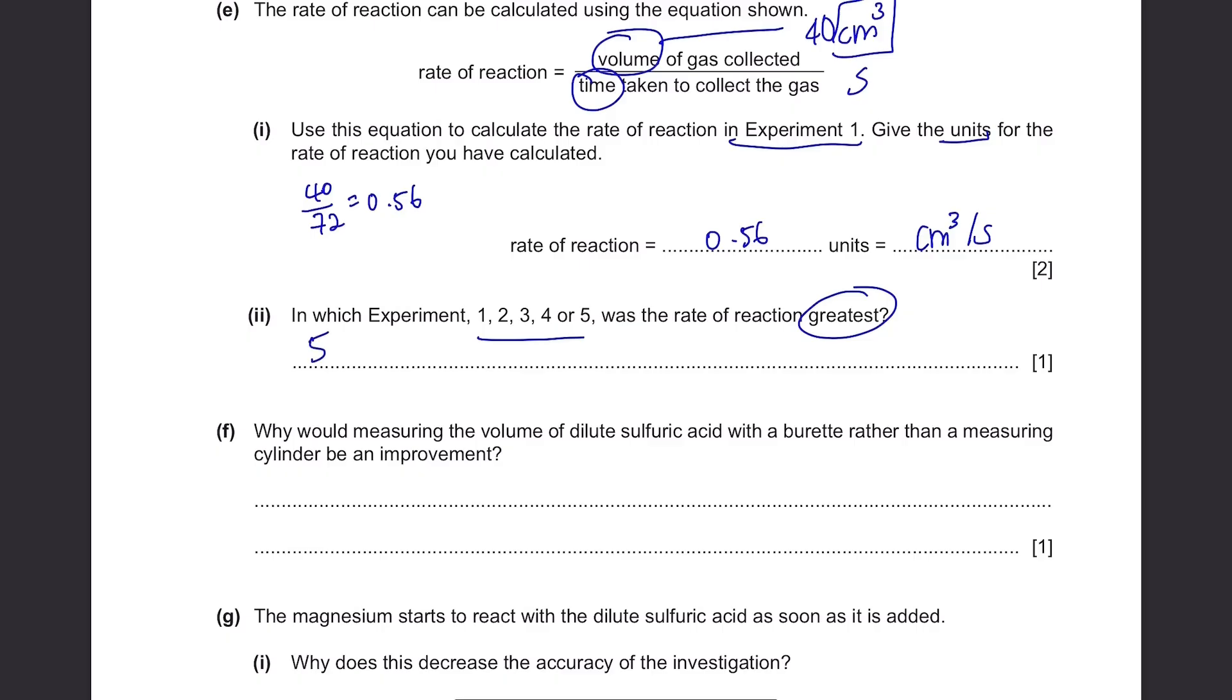Part F. Why would measuring the volume of dilute sulfuric acid with a burette rather than a measuring cylinder be an improvement? Because burettes are more accurate than measuring cylinders.